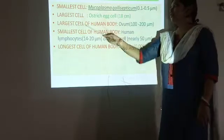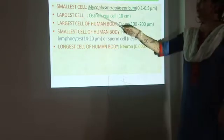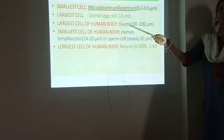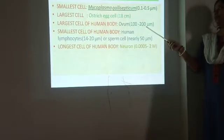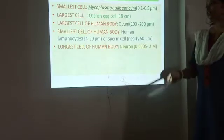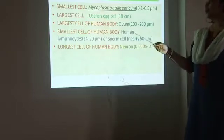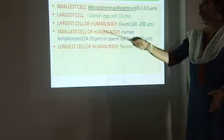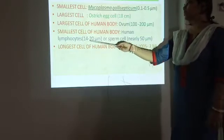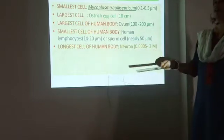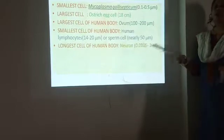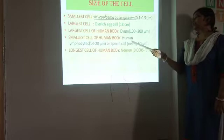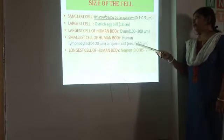The largest cell in the human body is the ovum, present in the human female body, with a measurement of 100 to 200 micrometers. The smallest cell of the human body is the human lymphocyte, present in the blood, with a measurement of 14 to 20 micrometers. According to some other scientists, the smallest cell in the human body could also be the sperm cell, with a measurement of about 50 micrometers.